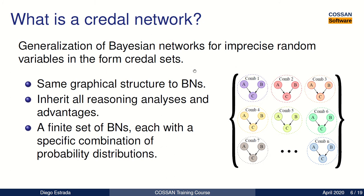A Credal Network is a generalization of Bayesian Networks for imprecise probabilities. It inherits all the reasoning, analysis, and advantages, as well as the graphical structures of Bayesian Networks. In fact, a Credal Network can be regarded as a finite set of Bayesian Networks, each of them with a specific combination of probability distributions.